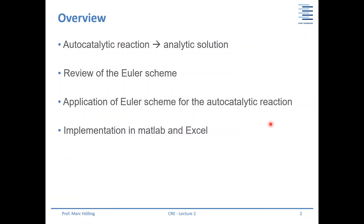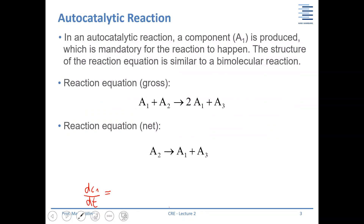So, you may remember the autocatalytic reaction — what does it mean? In an autocatalytic reaction, component A1 is produced, but this component is also mandatory for the reaction to happen. This means that for the reaction to take place you need A1 and you need A2, and in this reaction a second molecule of A1 is produced while A2 is consumed and A3 is produced. This is the gross reaction.